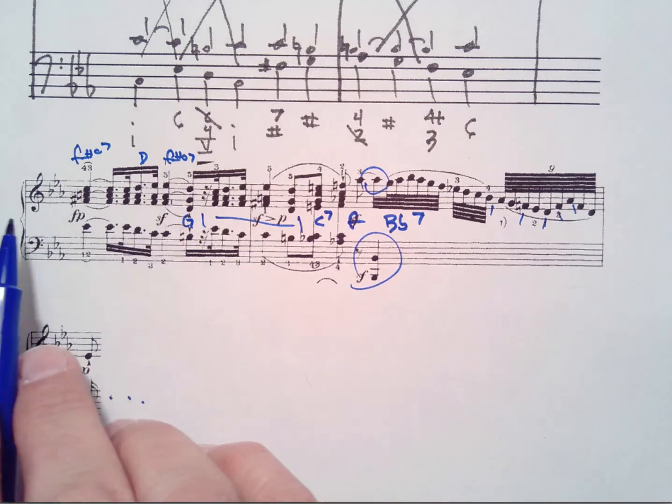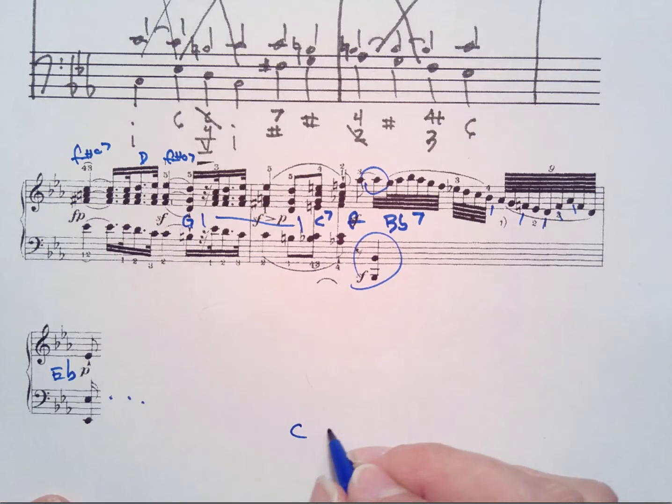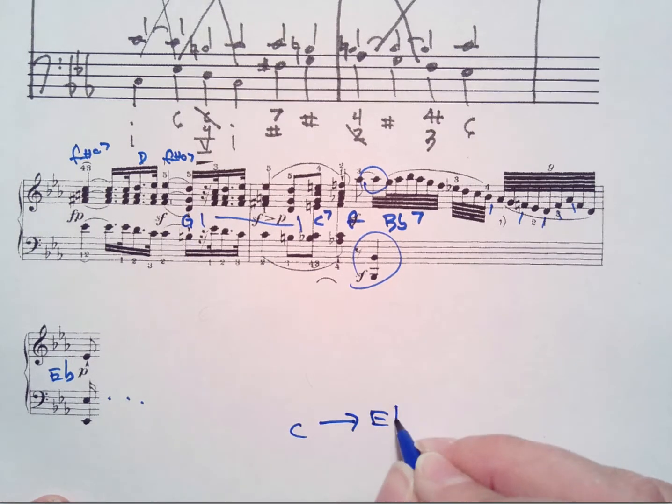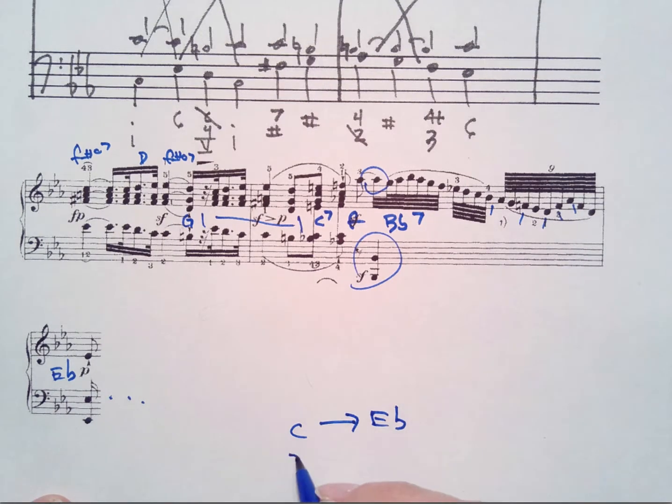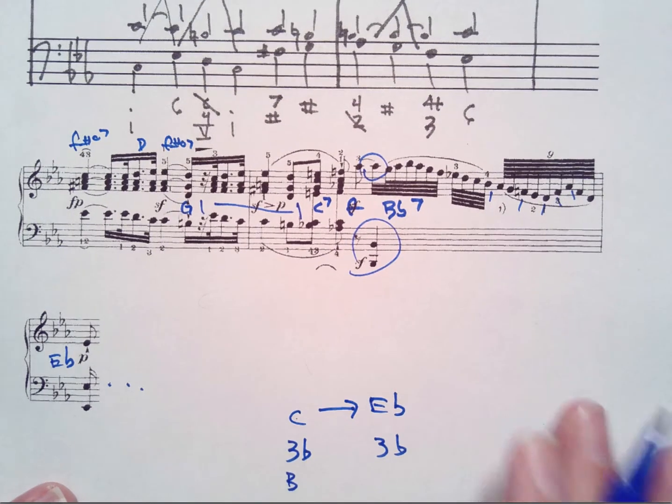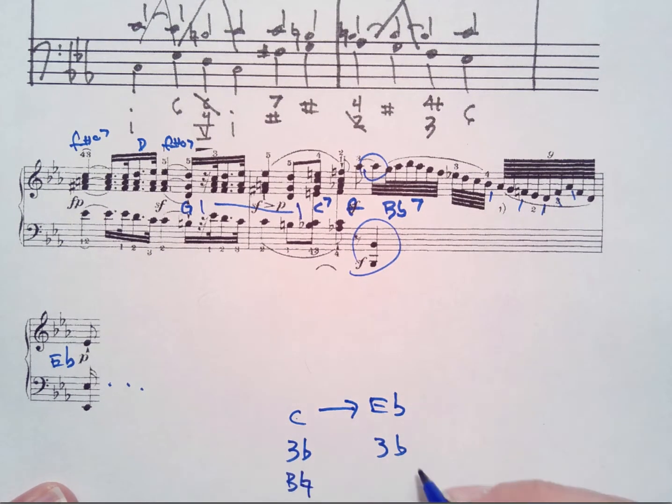So this is modulating from C minor to E-flat major. And as you know, they both have the same key signature. A primary difference will be C minor will have B-natural as its leading tone. E-flat will have B-flat as the fifth scale degree, as the dominant.